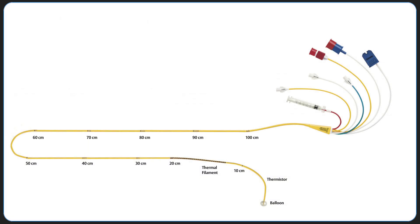The pulmonary artery catheter is a multi-lumen catheter with markings at each 10 cm interval from the tip. Each thin dash represents 10 cm, and each thick dash represents 50 cm.